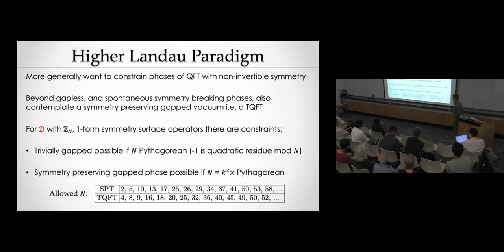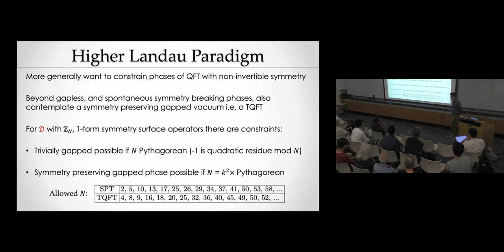In the model I was talking about, it has the one-form symmetry on the lattice; you'll also break this duality symmetry. They form an algebra where you can't preserve D without preserving the one-form symmetry — there are interesting patterns of symmetry breaking very particular to non-invertible symmetries.